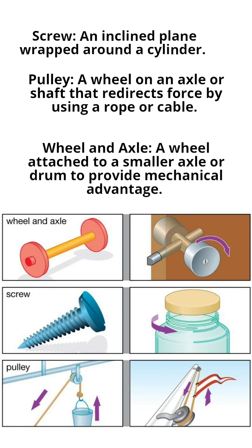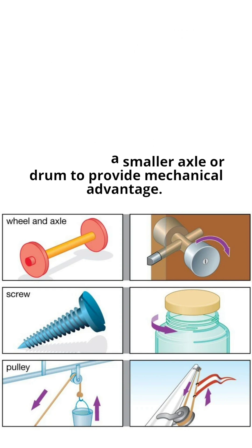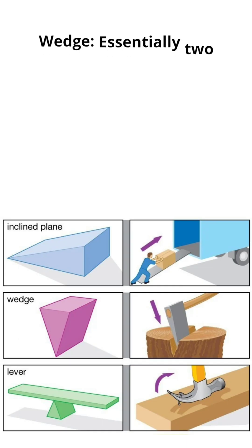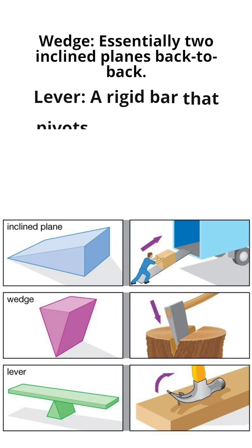A wheel and axle — a wheel attached to a smaller axle or drum — provides a mechanical advantage. What is mechanical advantage? The formula is load divided by effort; that is called mechanical advantage.